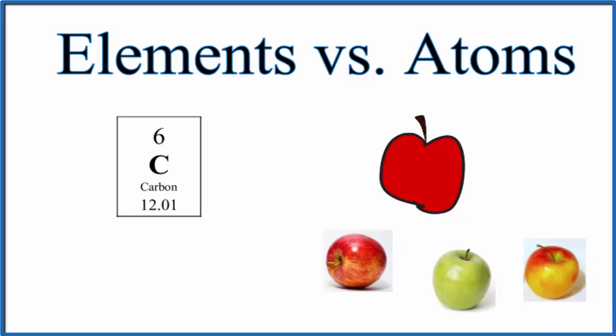So there are many different varieties of apples, but they're still apples. They have commonalities - they have the stem, they're round, sometimes they're red, not always. When we look at elements, if I look at the element carbon, it's made up of different varieties of atoms.